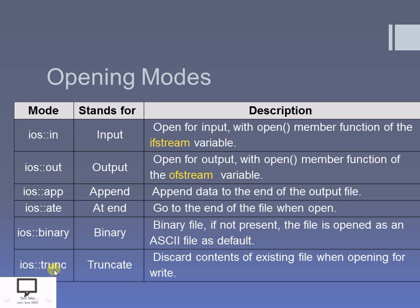The `trunc` mode stands for truncate mode, which is helpful to discard the content of an existing file when you open it for writing purpose. So these are the different opening modes. They are helpful whenever you will open your file for these different purposes. According to your requirement, you need to choose the correct mode that you need to provide as the second parameter to the `open()` function.